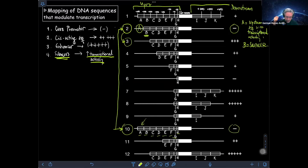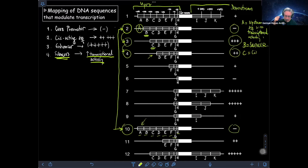Moving forward, comparing constructs 3 and 4 allows us to figure out the activity associated with segment C. With segment C present we have three crosses, and when segment C is eliminated we have only two crosses of transcriptional activity. That means C is a cis-acting sequence, because it increases transcription — it has the ability to increase the output of transcription for that particular reporter gene.